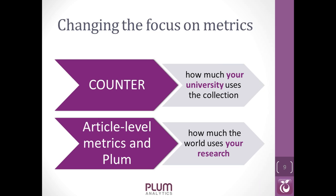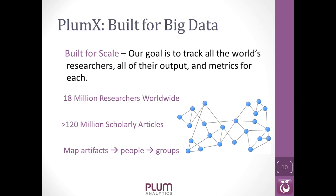When Andrew and I started this company, my librarian friends would say it sounds like what you're doing is similar to Counter — a standard way of collecting usage statistics from publishers and database providers that libraries subscribe to, so you can compare downloads and support your collection. What we're doing with article-level metrics is pretty much the opposite. Counter tells you how much your institution uses the world's research; what we're doing at Plum is how the world uses your institution's research.